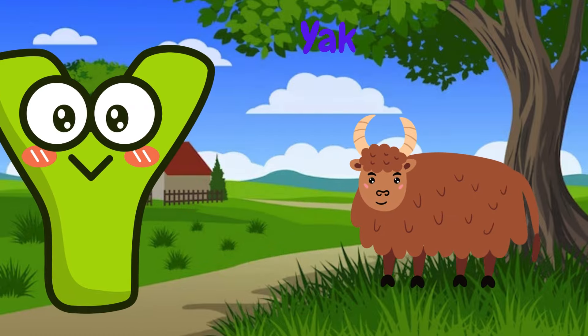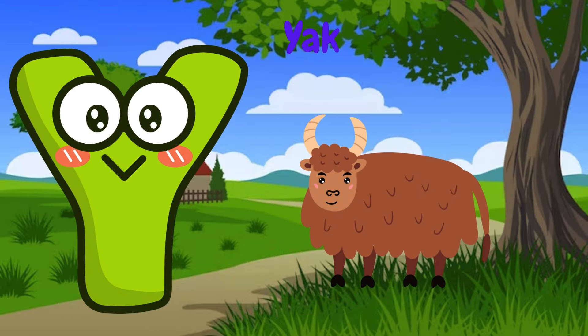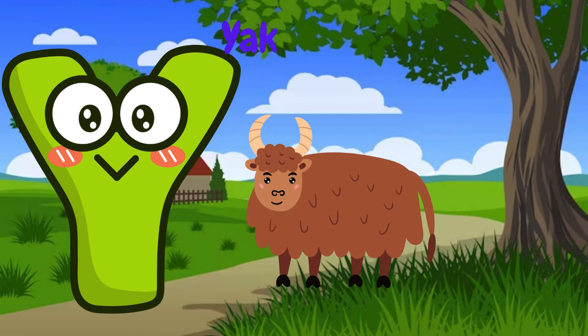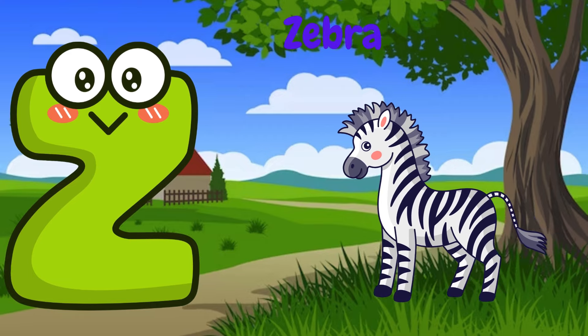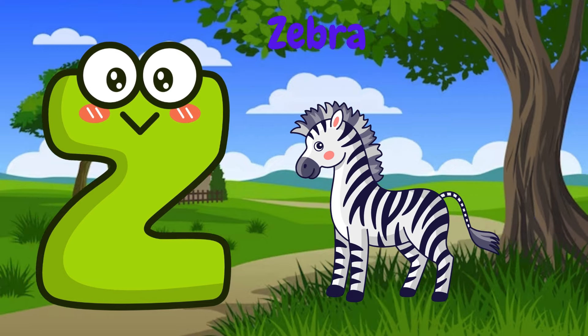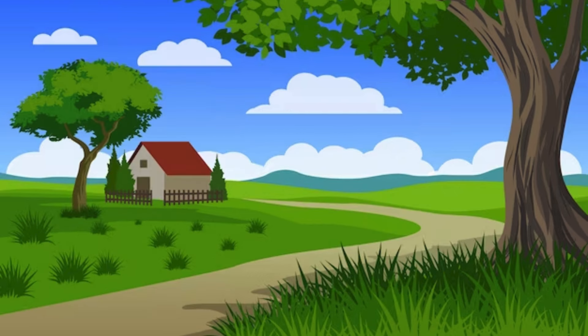Y is for yak, y-y-yak. Z is for zebra, z-z-zebra. Thank you.